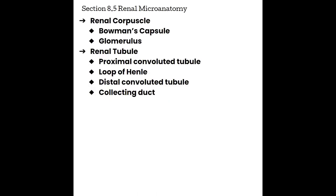Section 8.5: Renal Microanatomy. The microanatomy and physiology of the kidney are complex subjects. For microanatomy, focus on the parts of the nephron and the pathway of blood and urine through the vessels and tubules. The nephrons are the functional unit of the kidney — where filtration, absorption, and exchanges of waste, nutrients, and water occur. There are about a million nephrons in each kidney, and there are two parts to each nephron: the renal corpuscle and the renal tubule.